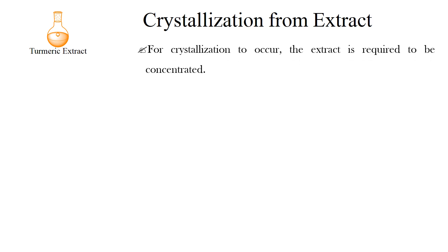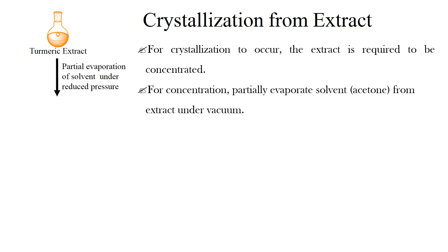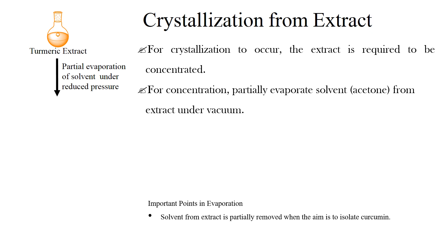For crystallization to occur, the extract is required to be concentrated. For concentration, partially evaporate the solvent from the extract under vacuum. It should be noted that the solvent from the extract is partially removed when the aim is to isolate curcumin, and completely removed when the aim is to make turmeric oleoresin.